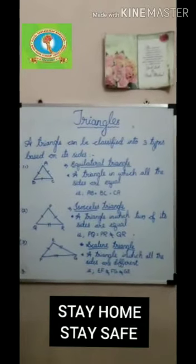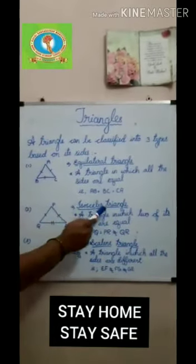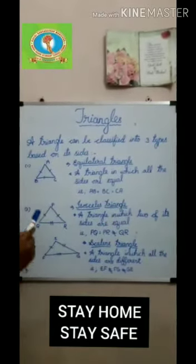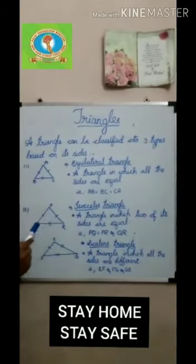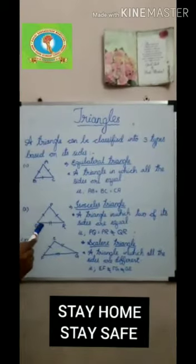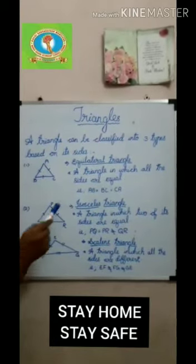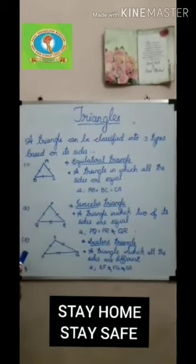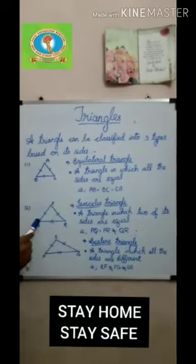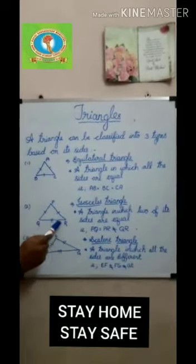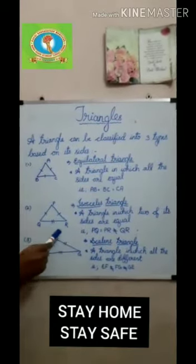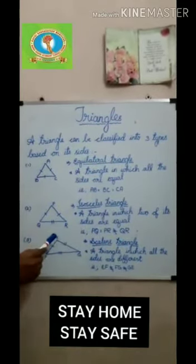Next, it is the isosceles triangle. A triangle in which two of its sides are equal is called an isosceles triangle. Here, PQ is equal to PR, which is not equal to QR.